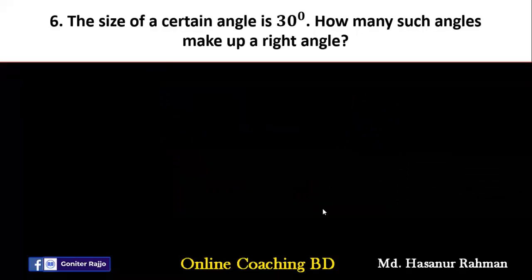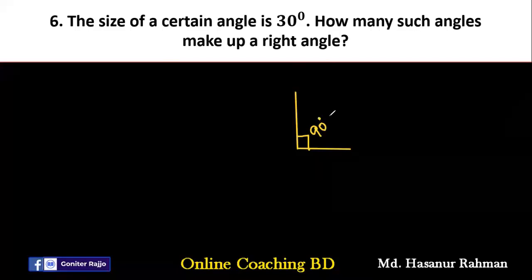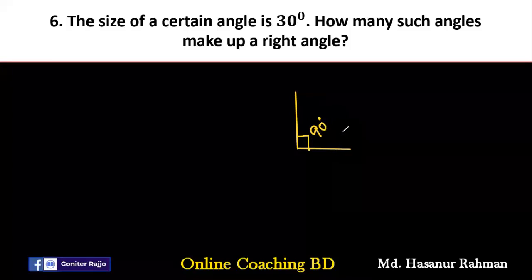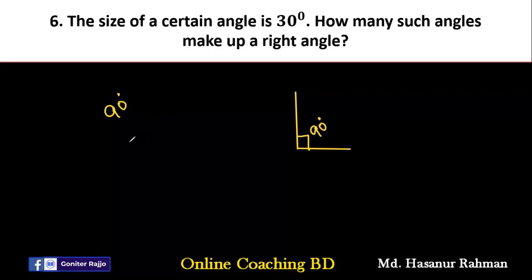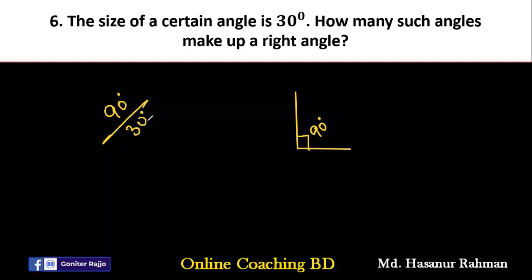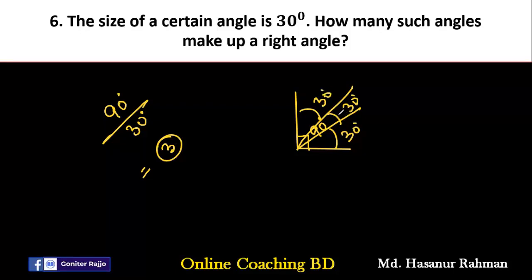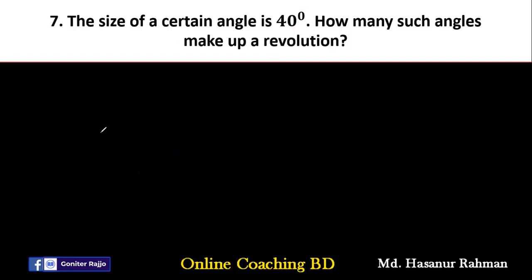Number six says: the size of a certain angle is 30 degrees — how many such angles make up a right angle? A right angle means 90 degrees. So we divide 90 by 30, which gives 3. You need three 30-degree angles to make a 90-degree right angle.